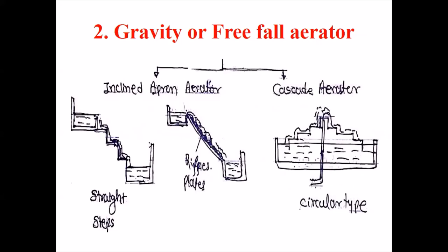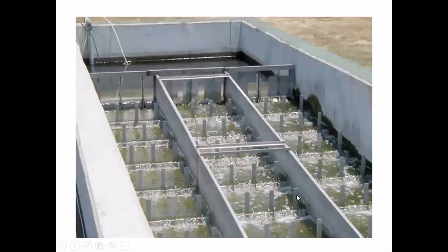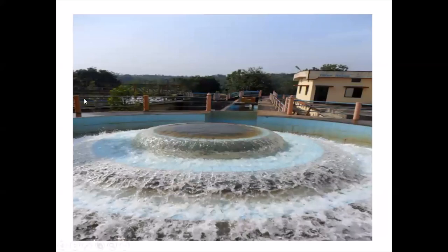The second type of aerator is the gravity or free-fall aerator. Water flows step by step and atmospheric oxygen is added. The cascade aerator spreads water to the atmosphere at a certain height and adds atmospheric oxygen to the raw water. The raw water trickles step by step, and the aerated water is collected in a chamber. This is the image of the cascade aerator.